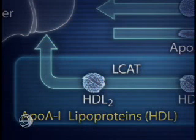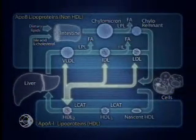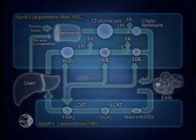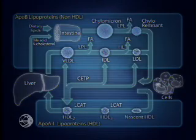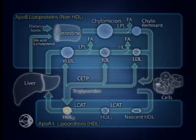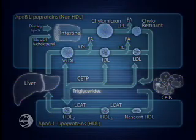Now rich in cholesterol esters, HDL2 engages in an exchange with triglyceride-rich lipoproteins, mediated by cholesterol ester transfer protein, CETP. Cholesterol ester from HDL2 is transferred to ApoB-containing lipoproteins in a one-to-one exchange for triglycerides. The result is further cholesterol enrichment of ApoB lipoproteins and triglyceride enrichment of HDL.